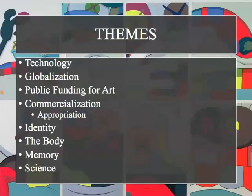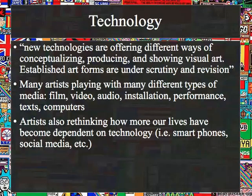We're going to divide up contemporary works by themes: technology, globalization, public funding for art, commercialization, appropriation, identity, the body, memory, and science. Technology is obviously a big part of contemporary society, and artists play with the constructs of what social media and technology means to us as individuals. New technologies offer different ways of conceptualizing, producing, and showing visual art — more film, video, audio, installation, performance, text, computers, phones, printers, etc.